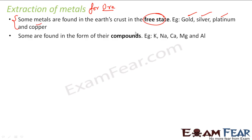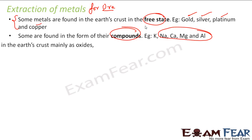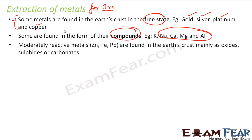Some metals are found in compounds because they are reactive — for example, sodium, potassium, calcium, and magnesium. They are reactive so they don't exist in free state; they exist in compounds. Some are moderately reactive — for example, iron, lead, and zinc — and they are found in oxides, sulfides, or carbonates.